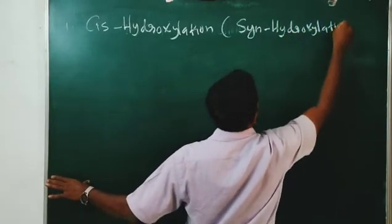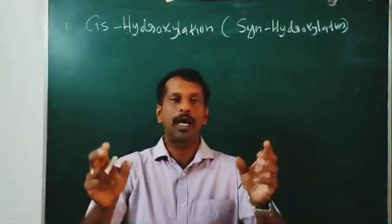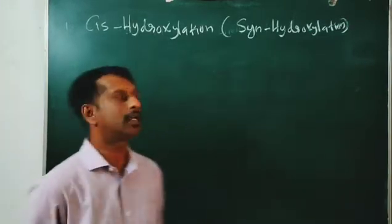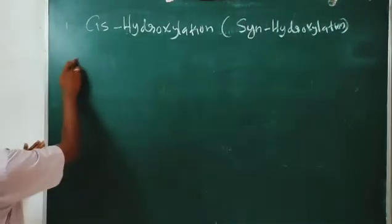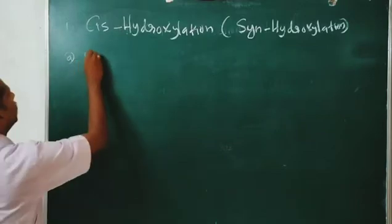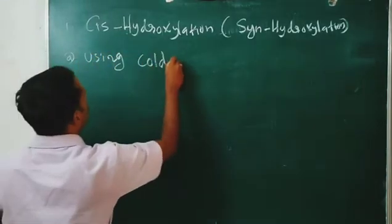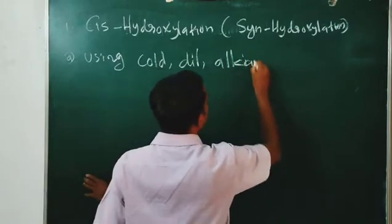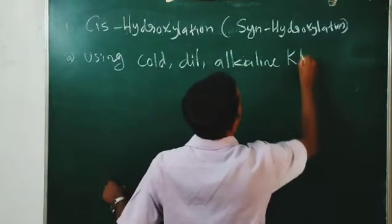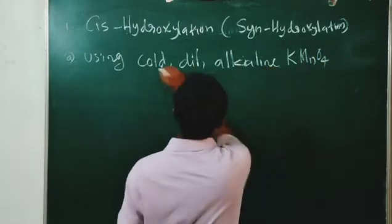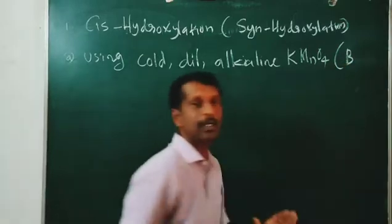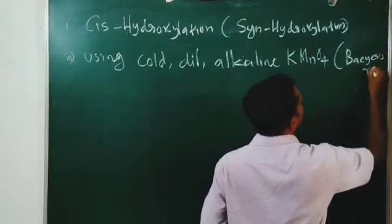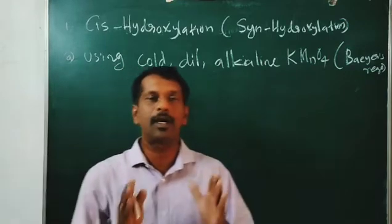In cis-hydroxylation, also known as syn-hydroxylation, the OH groups are added on the same side of the double-bonded carbon. For cis-hydroxylation, the first method is using cold dilute alkaline potassium permanganate. This is also known as Baeyer's reagent.